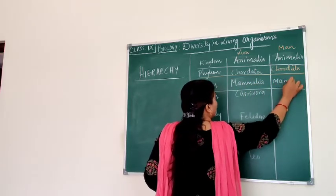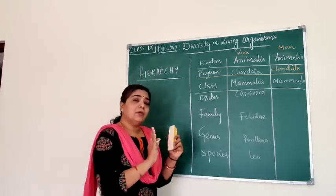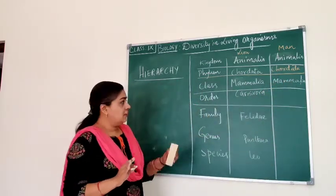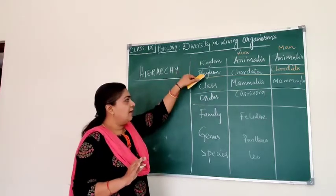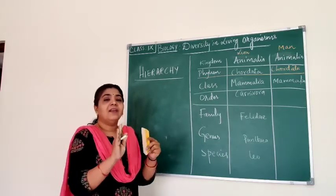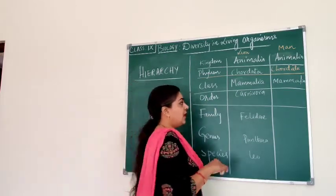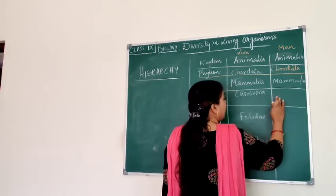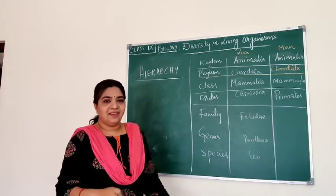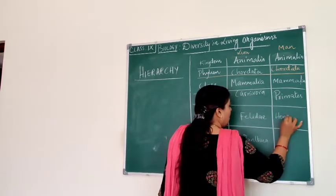Mammals give birth to their young ones directly and feed them with their own milk, so both lion and man share the same class. However, when we come to the order level, we start separating. Lion belongs to order Carnivora, while we humans belong to order Primates.